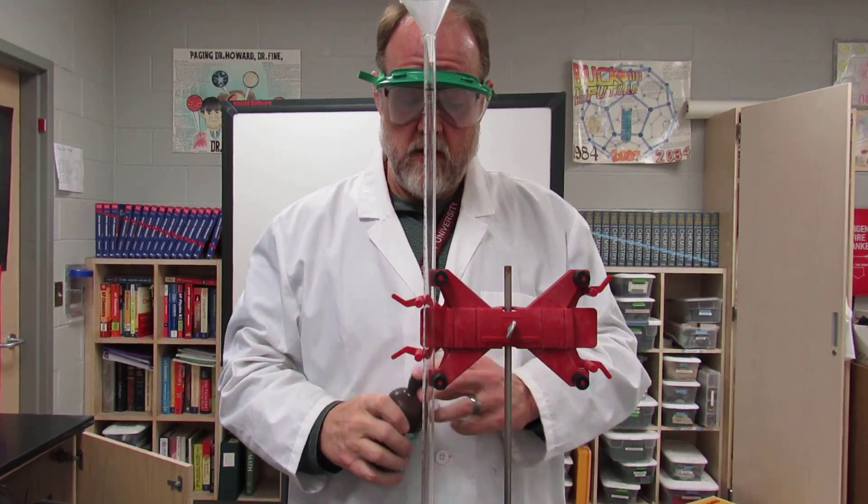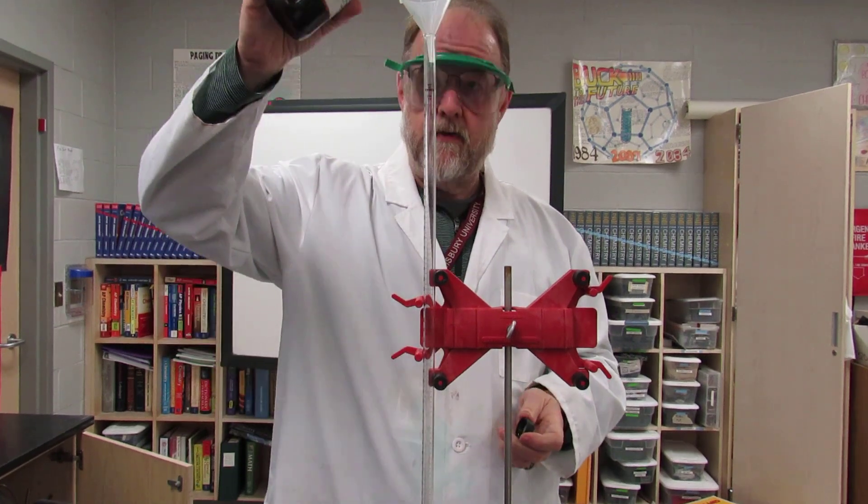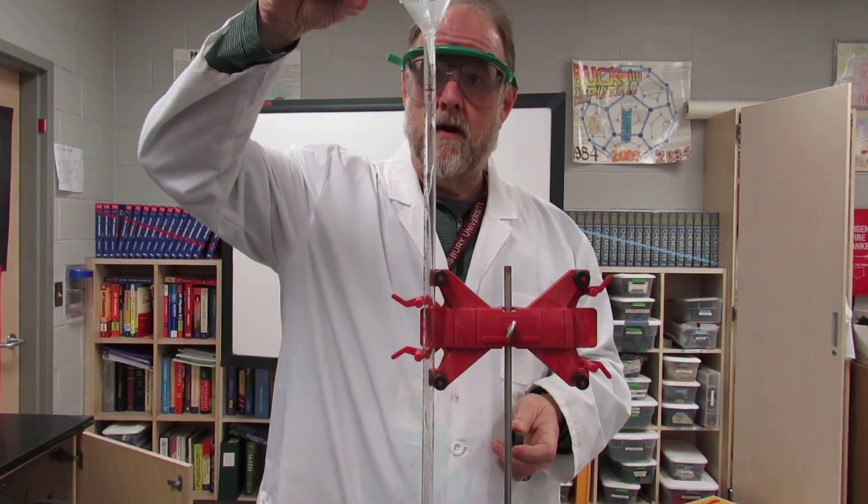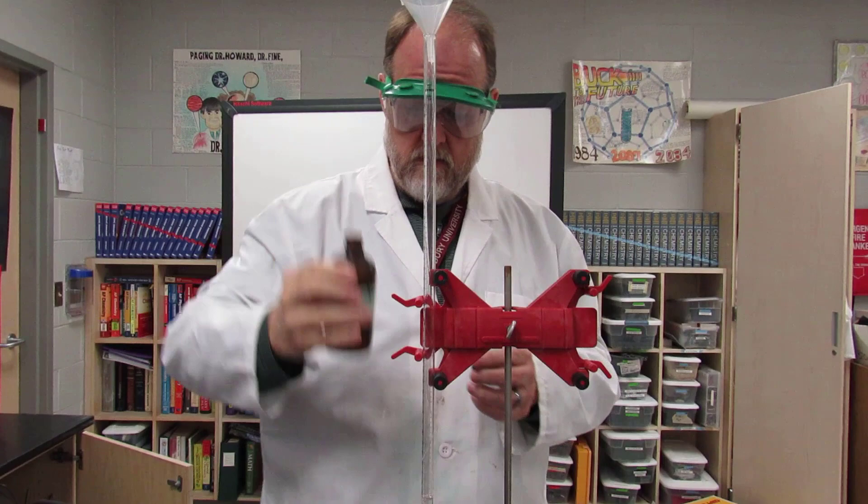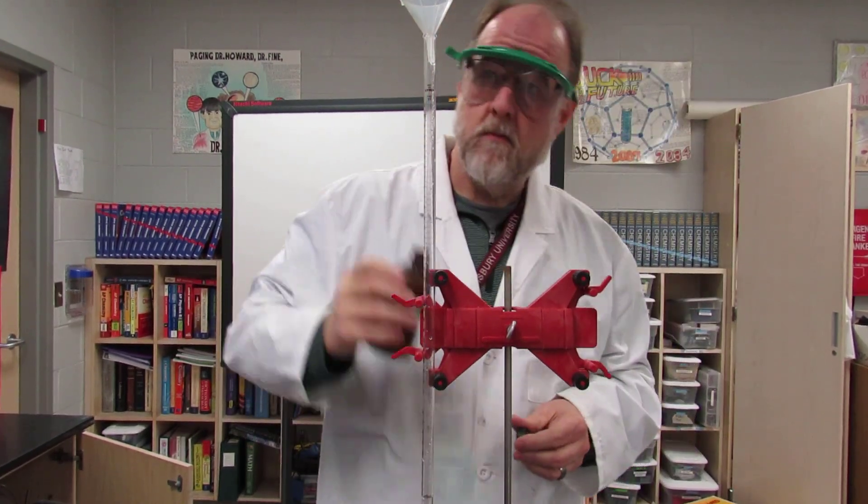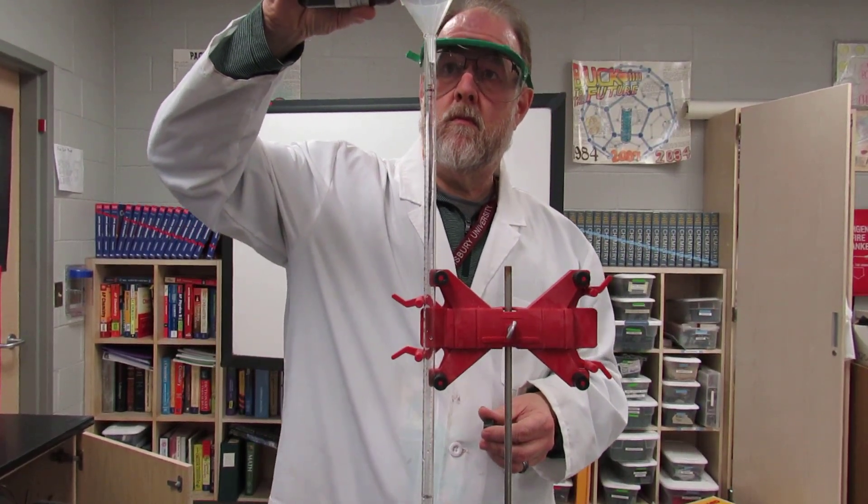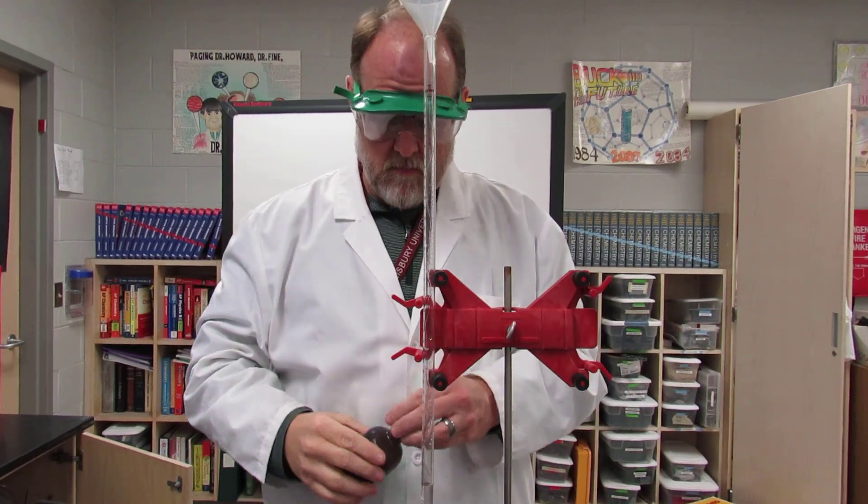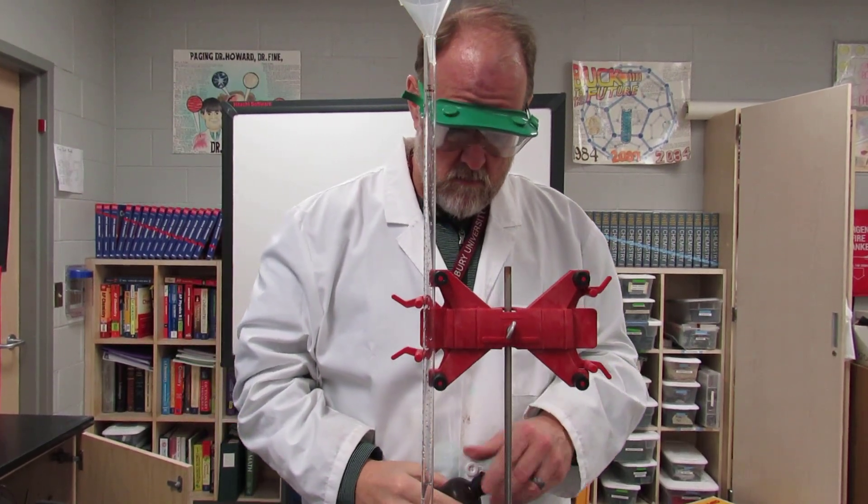You're going to pour some in and add between 10 and 15 mL. Use the graduations on the eudiometer to do that. You do not need to use a graduated cylinder to determine that. I think I need a little more, so add between 10 and 15 mL and you're good.